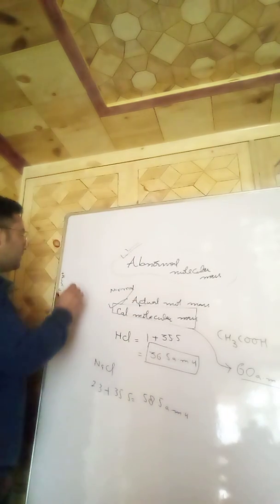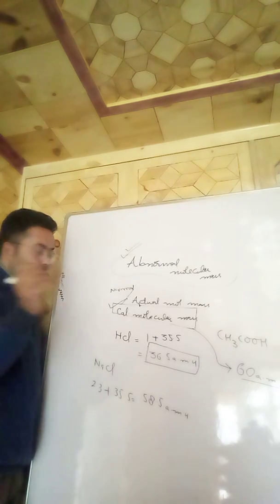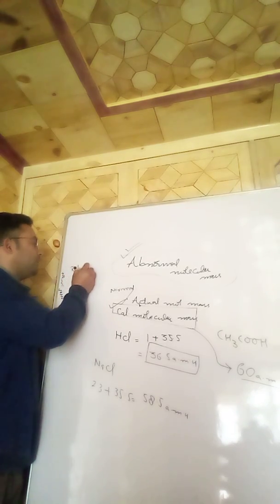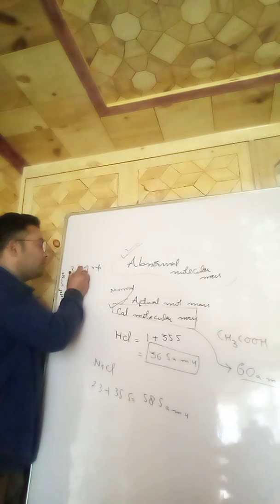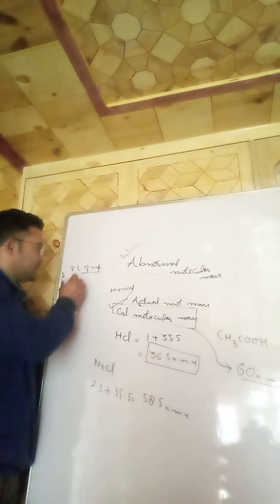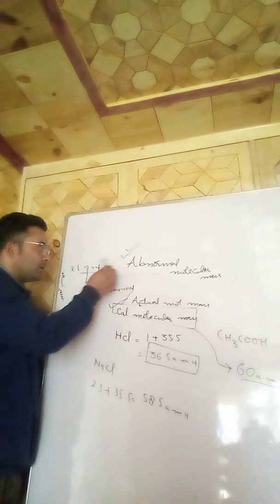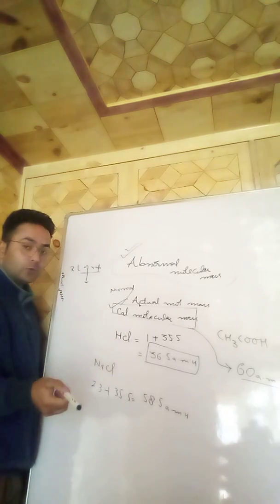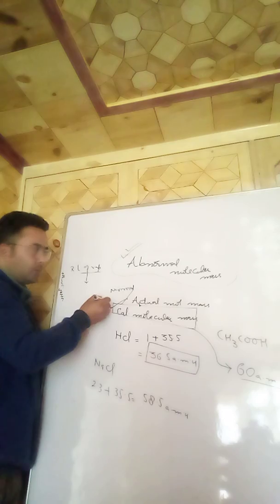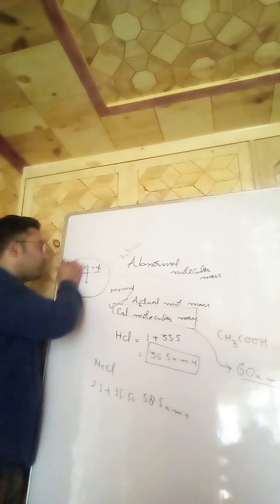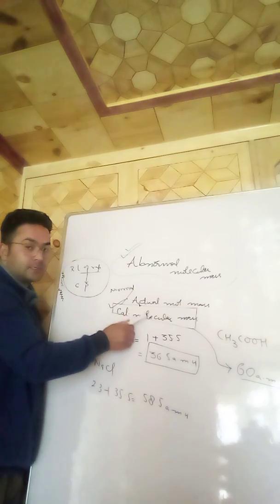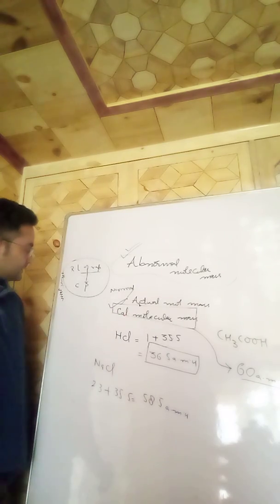For example, using the colligative property of relative lowering of vapor pressure, and applying the relevant formula, we can calculate the molecular mass of the solute. This molecular mass obtained from colligative properties may differ from the calculated molecular mass.